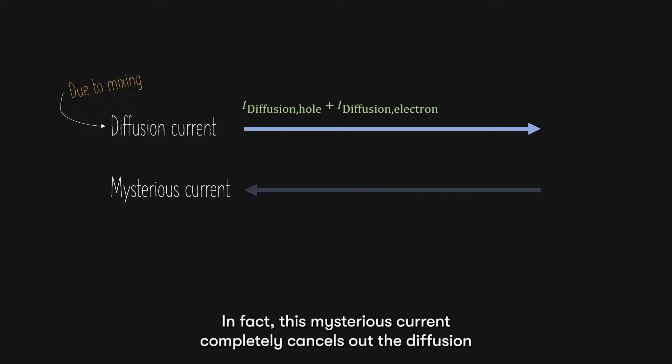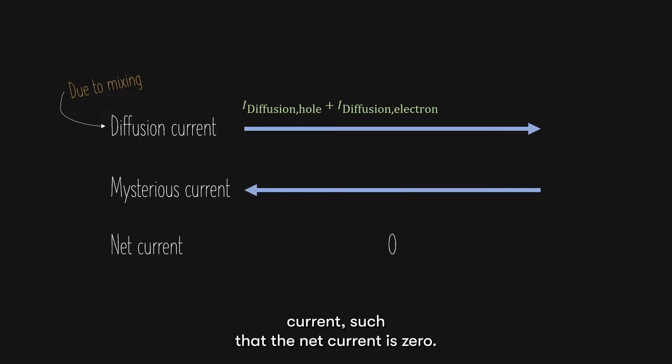In fact, this mysterious current completely cancels out the diffusion current, such that the net current is zero. This is another type of current that happens in semiconductors called drift current.